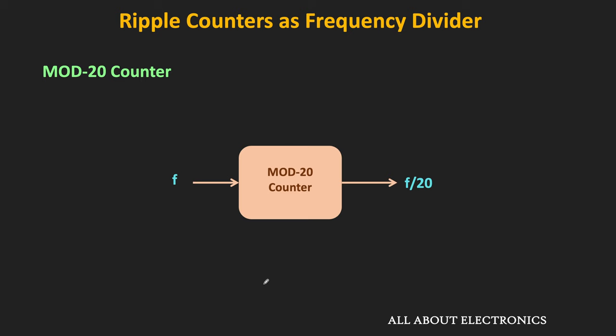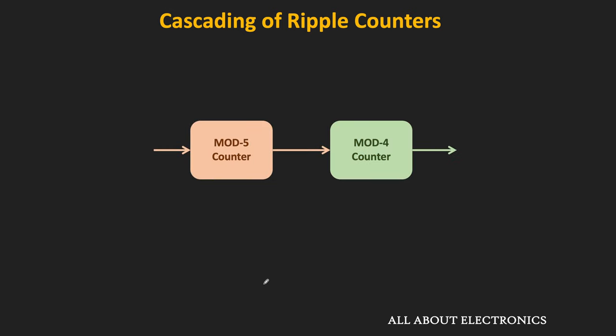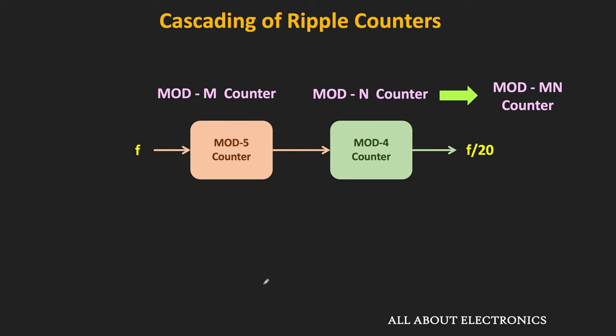We can also increase the modulus of the counter by cascading multiple counters of different moduli. For example, to design a mod 20 counter, we can cascade the mod 5 counter and the mod 4 counter. In this case, the output frequency of the cascaded system equals f/20. In general, if we cascade mod m and mod n counters together, the overall modulus equals mod mn. Even if we interchange the positions of the two counters, we still get the same overall modulus.